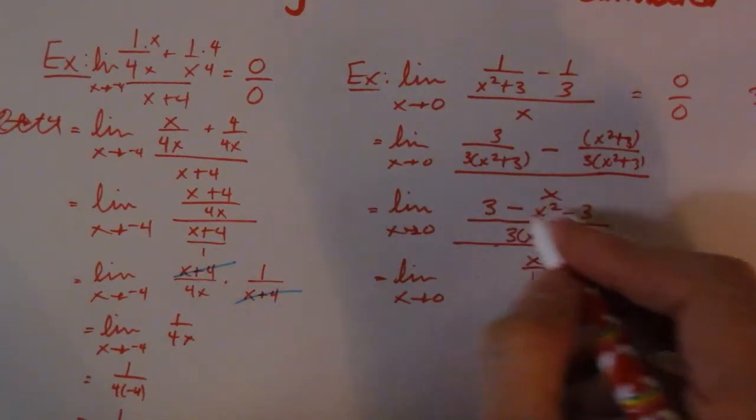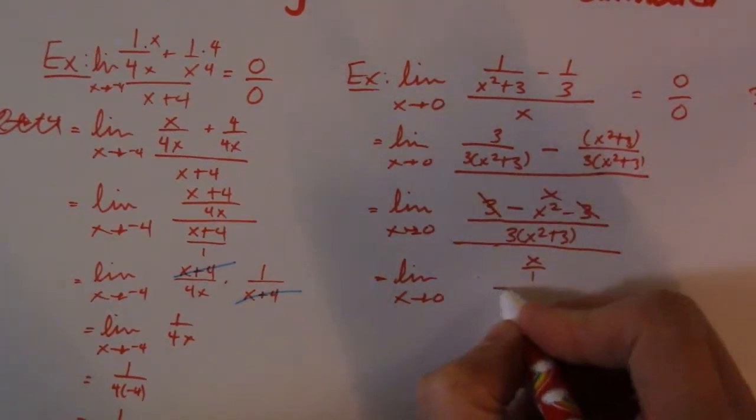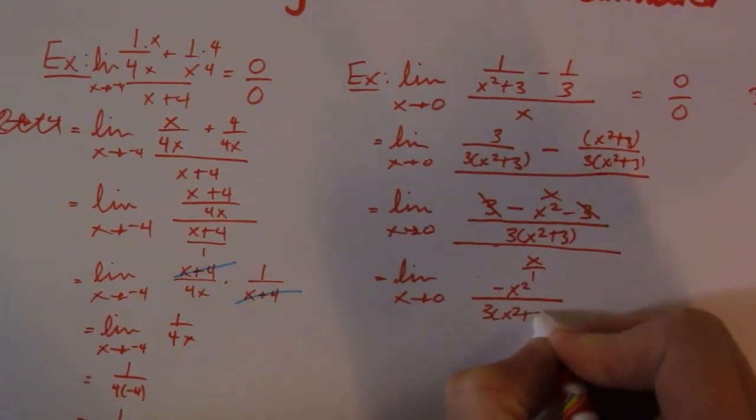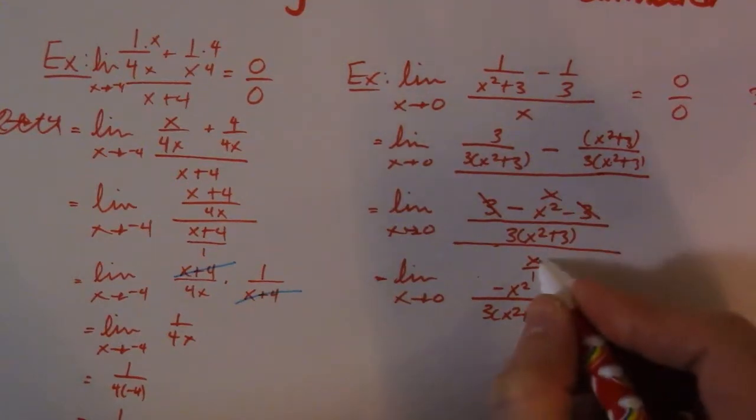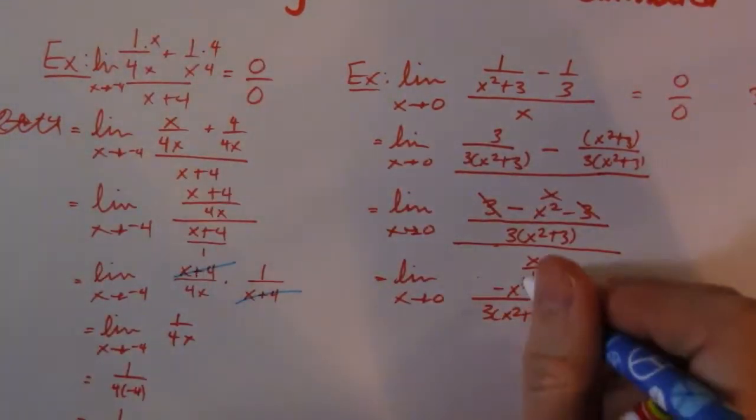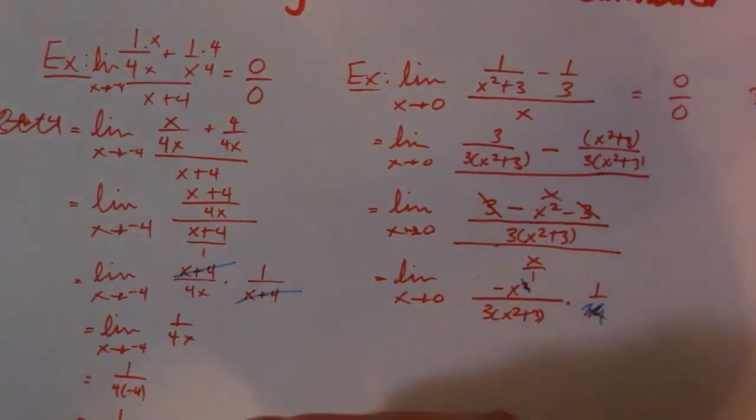So the limit as x goes to 0. I can simplify the top - these 3s cancel. I'm left with negative x² over 3(x² + 3) times 1 over x. So I get a little bit of cancellation.